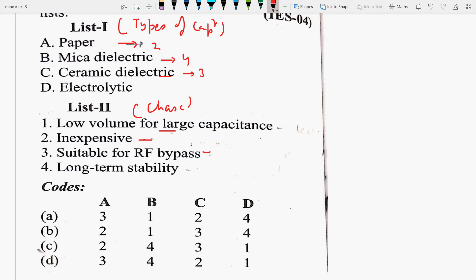Then, ceramic dielectric is used for RF bypass. So, this will be 3 options and the electrolytic capacitor is low volume for large capacitance. So, this is the 1. So, this will be 2, 4, 3, 1. So, your right answer will be C option.